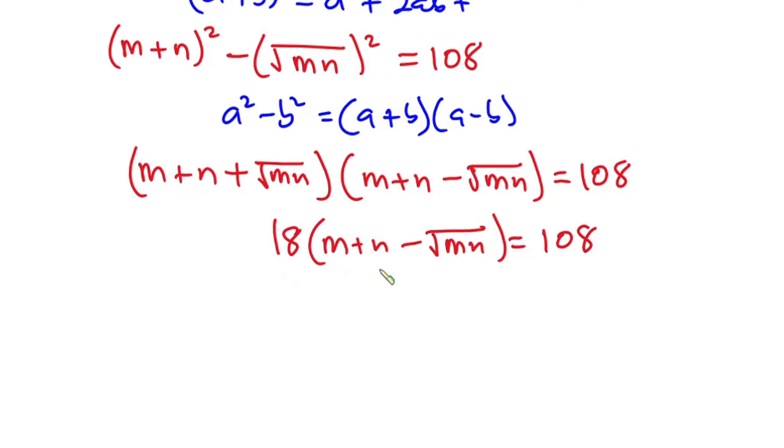Now let's go ahead and multiply each side of the equation by 1 over 18, so that this 18 will cancel. Now we have m plus n minus the square root of mn equals, so we have this side to be 6.